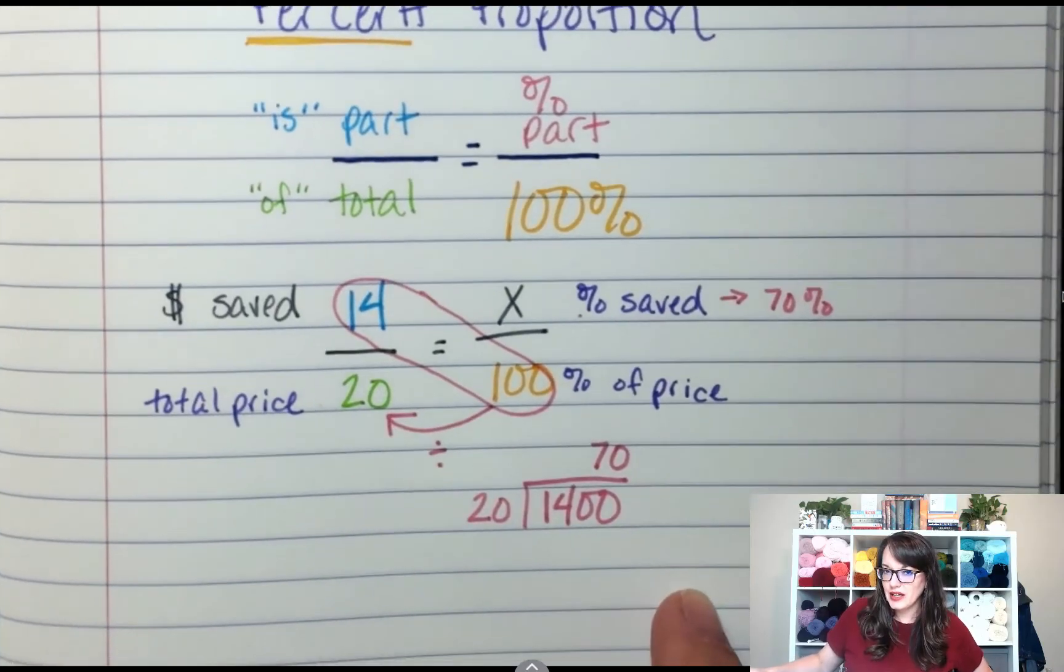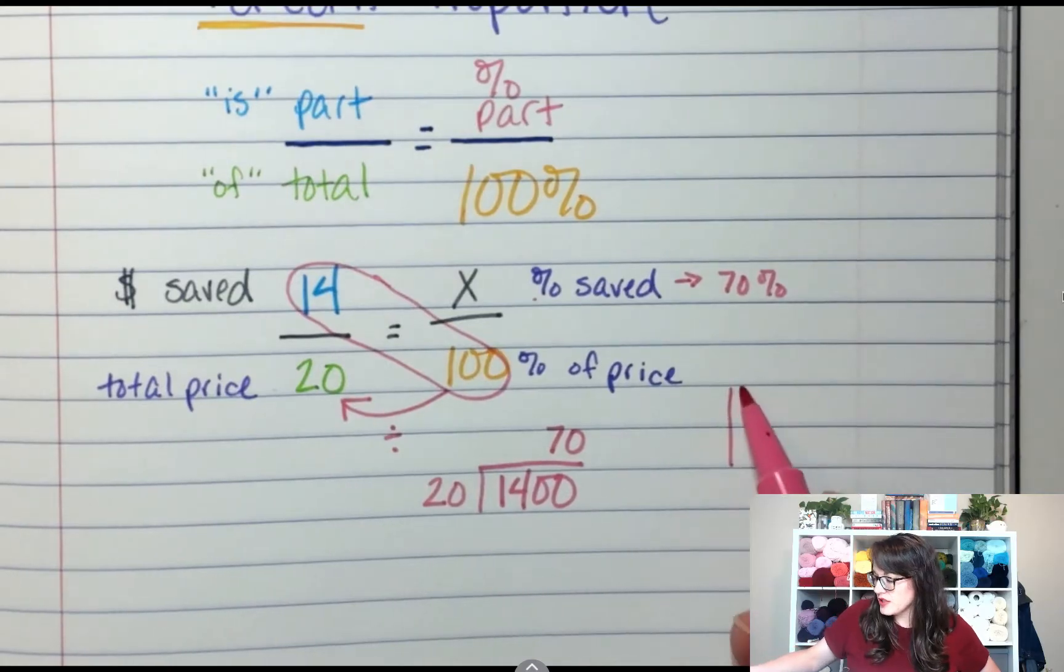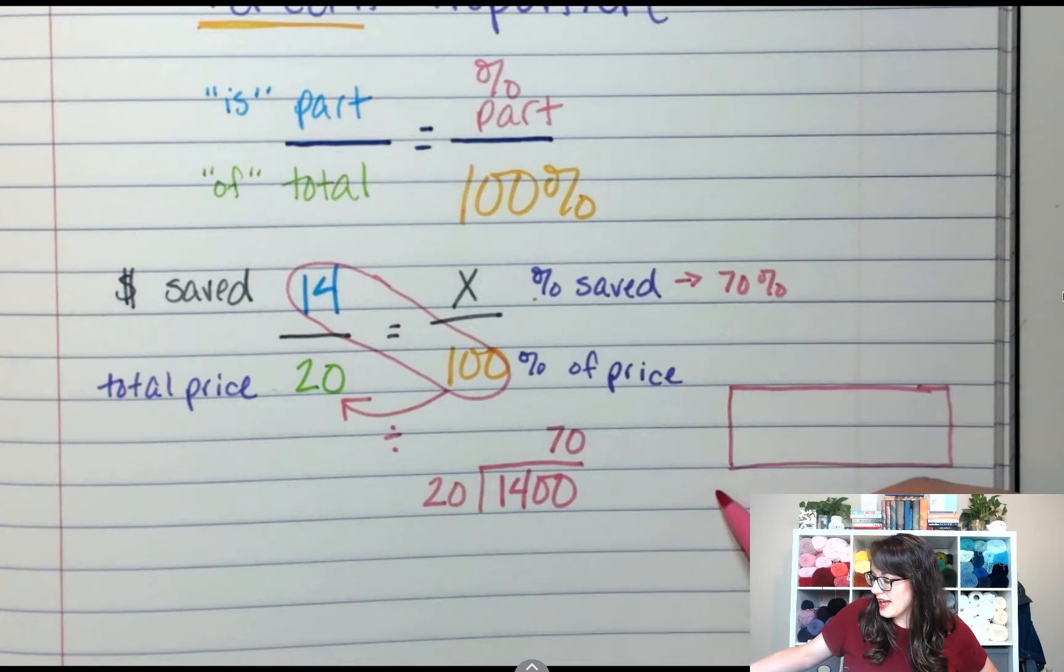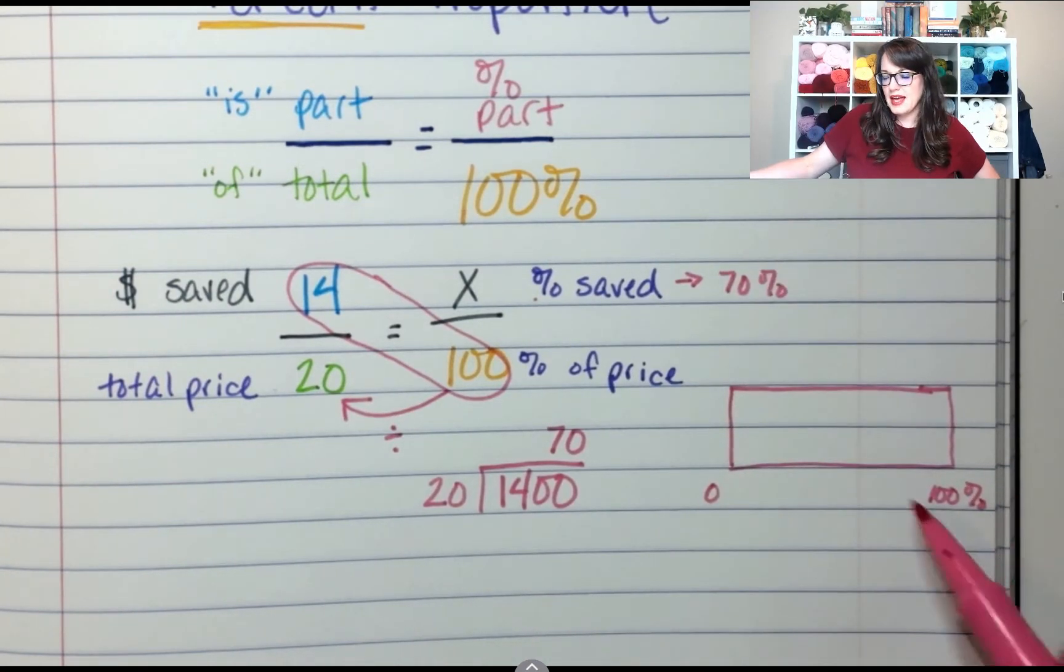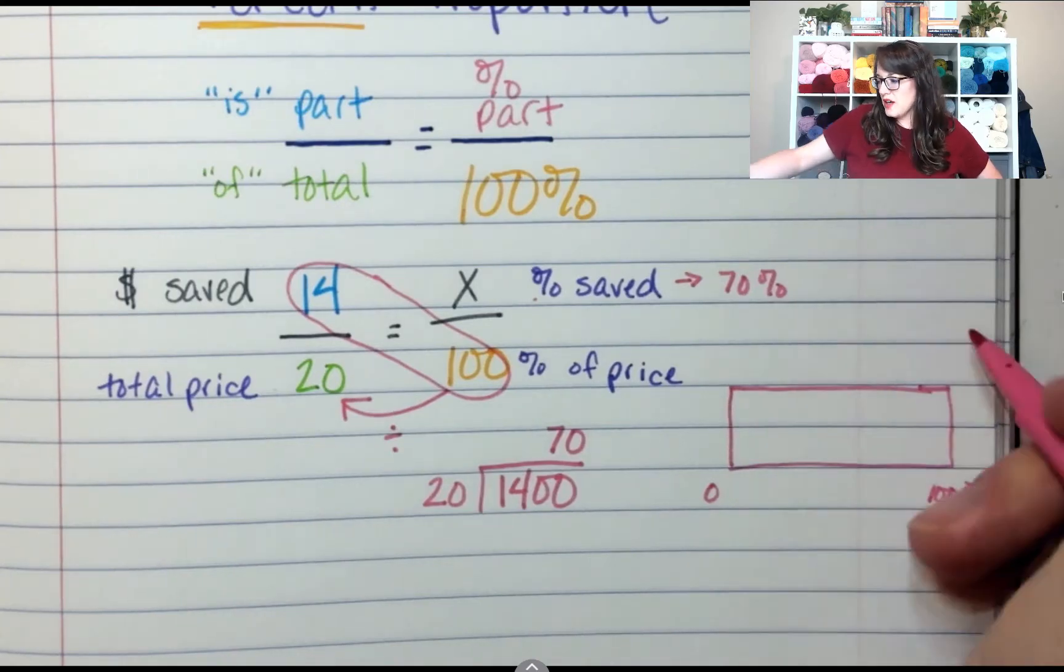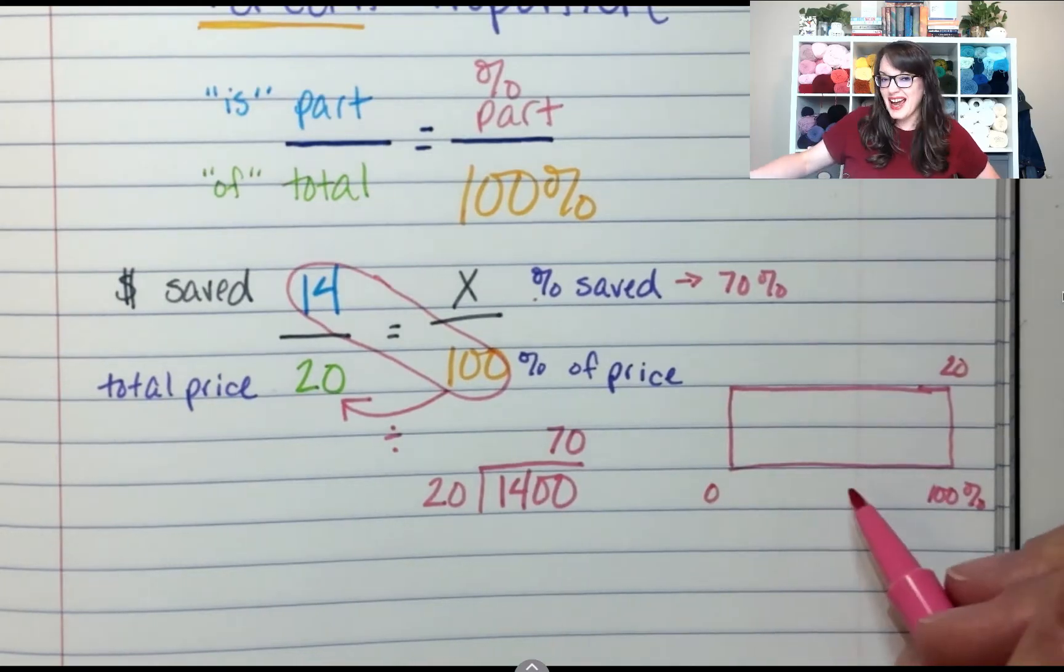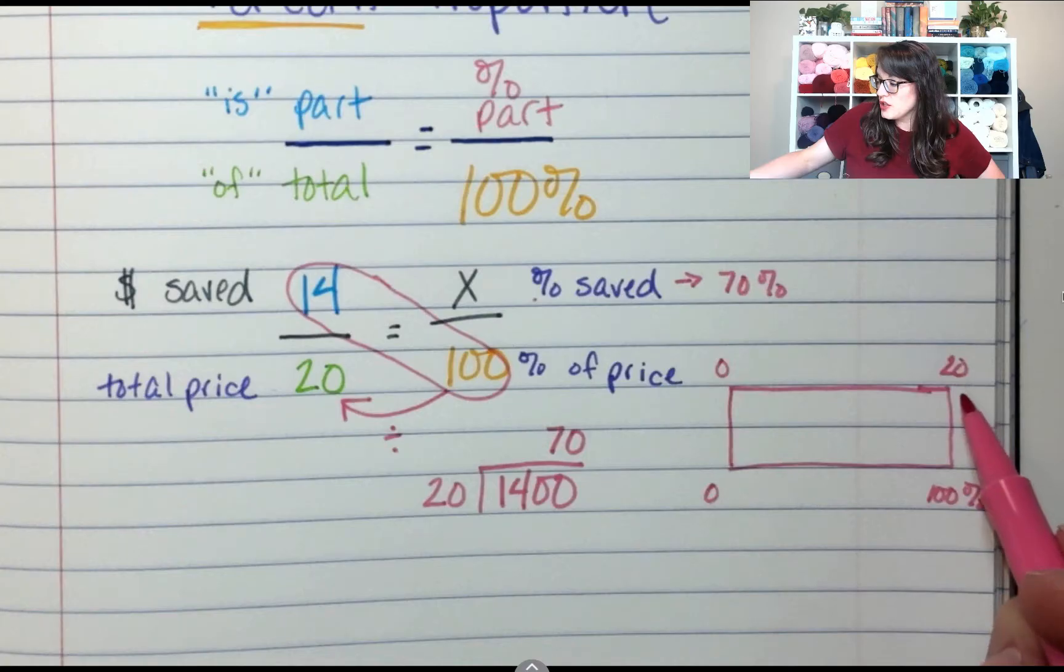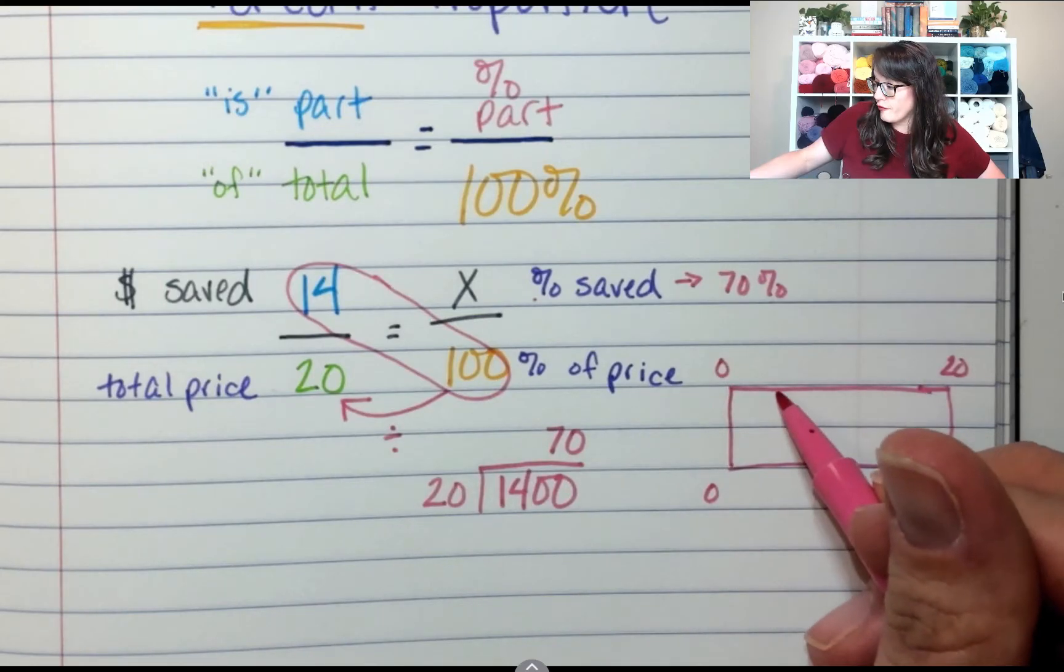If I saved 70%, I only had to pay 30% of the regular price. It's a really good deal. Another way we can look at this is by drawing a picture. I love a good picture. So if I drew just a little ratio table right here, where I had 0% to 100%, and $20 is the total price, that was 100% of the price, and I only paid, this is $0.